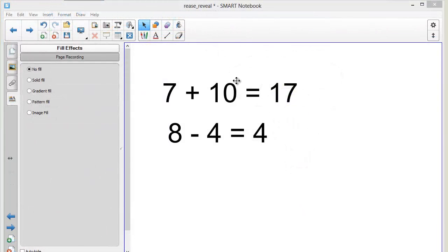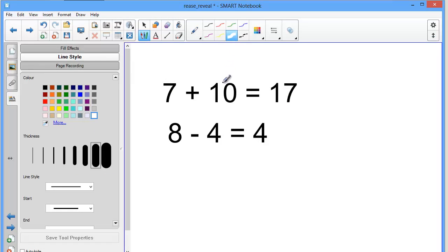Once you've created your white pen, you can make Erase and Reveal activities very easily. These are number sentences and you can see how easy it is to just blank out the section that I need.